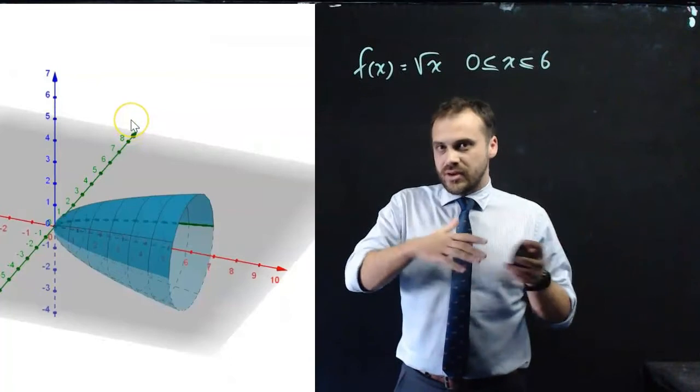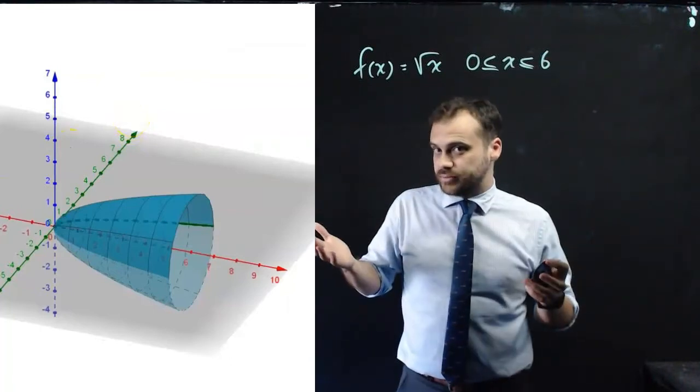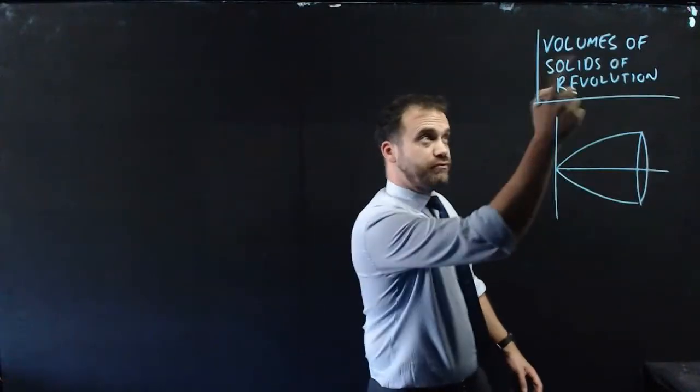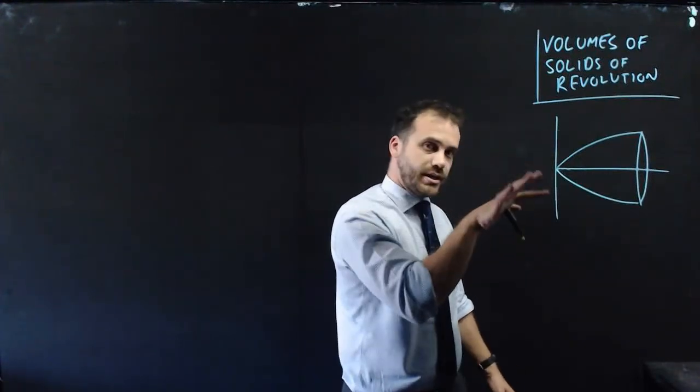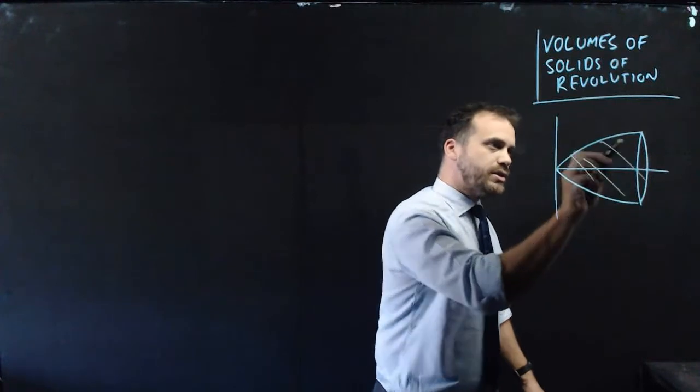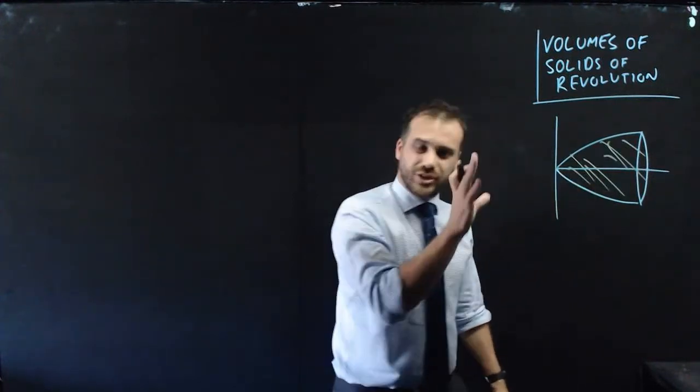Things like wine glasses, vases, that kind of thing. So the thing we're interested in is the volume of the solids of revolution. This is a solid of revolution revolved around the x-axis, and we're going to be interested in what is the volume of the shape.